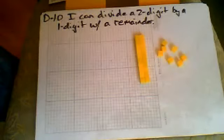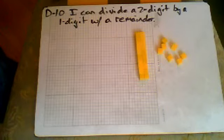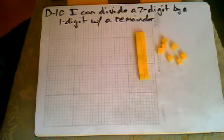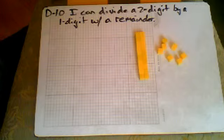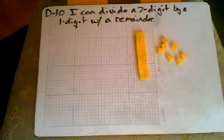Hey folks, this is Mr. Walsh and we are on target D10. You'll see I have manipulatives out because I think these numbers are manageable enough. This is a good time to go back and consider what we learned about using those manipulatives and how they work in association with the steps of division.